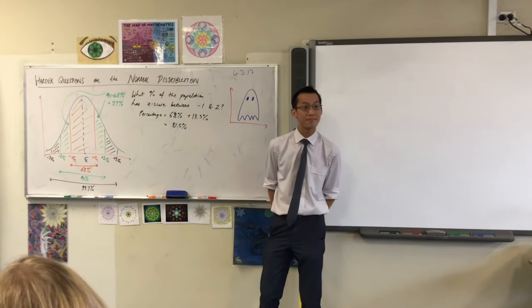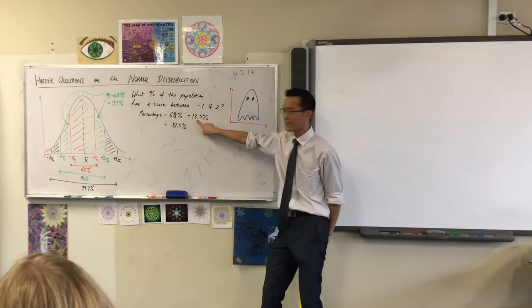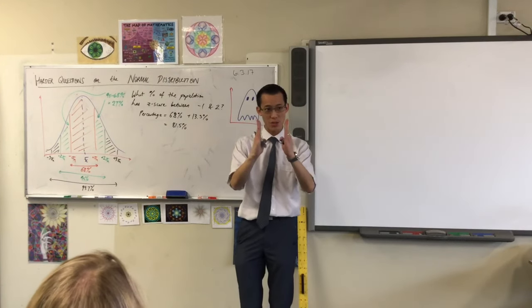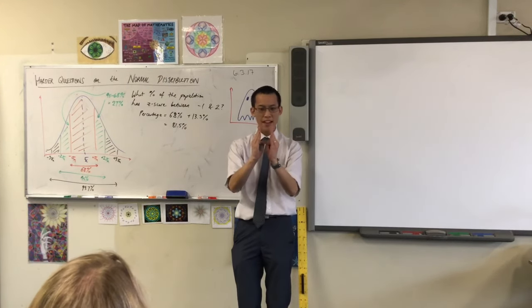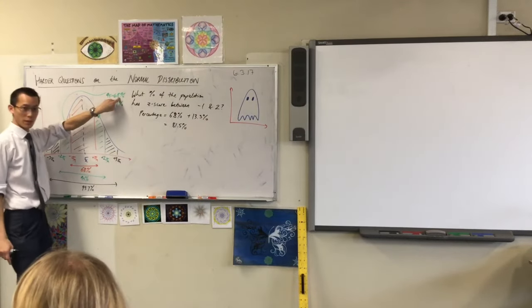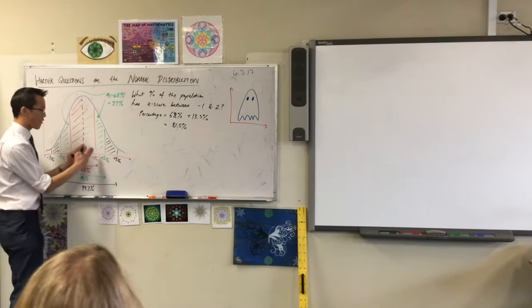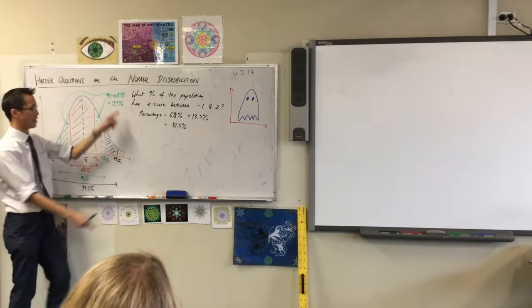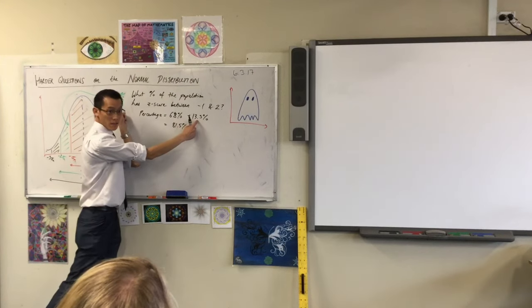You can work out any percentage of the population that is within a certain range. Correct. So what I've got is, if this is one standard deviation away and this is two, that going in both directions, that push outwards, is 27%. That's the difference between those two things, right? But if I only want one half of it, that's why I divide this by two to get that.